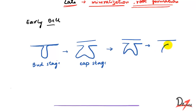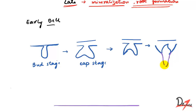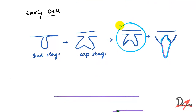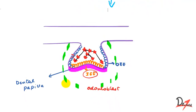In the bell stage, the crown shape will be determined. The structure will then proliferate from both sides to form the root, and ultimately we get the completed tooth. Let's now look at the bell stage in detail using this image.